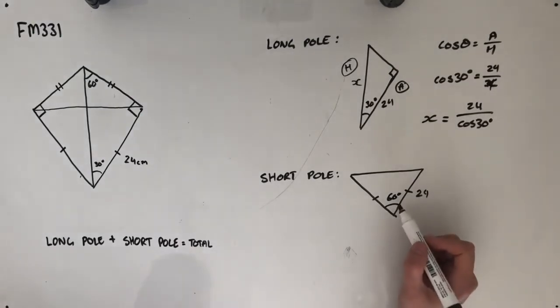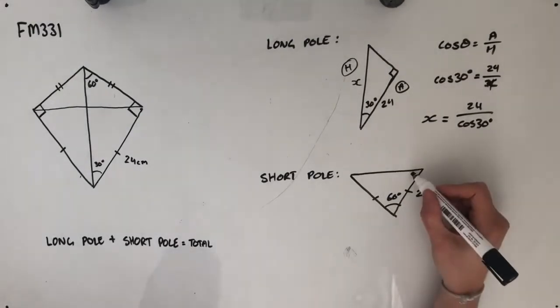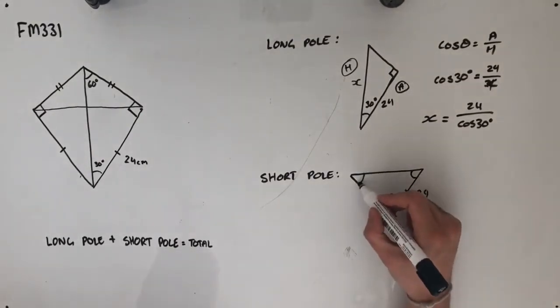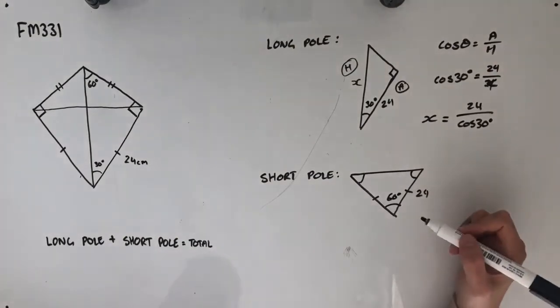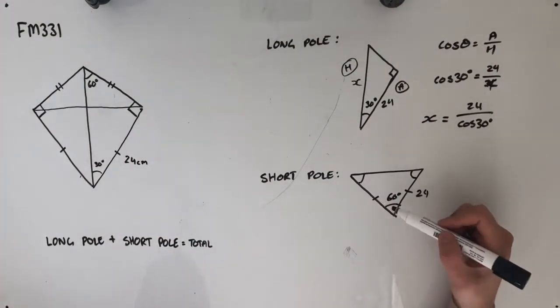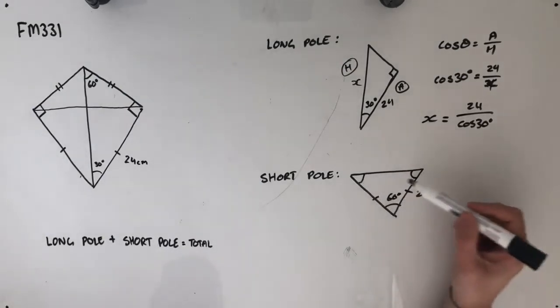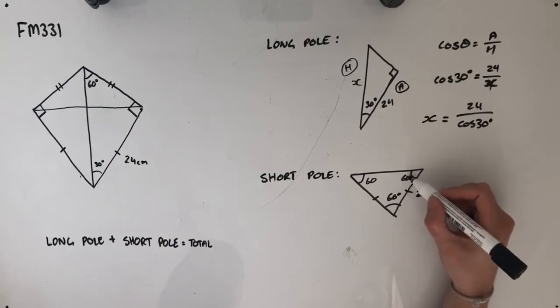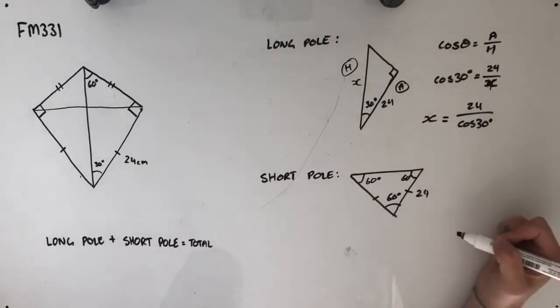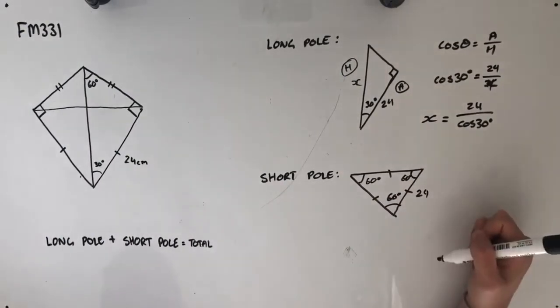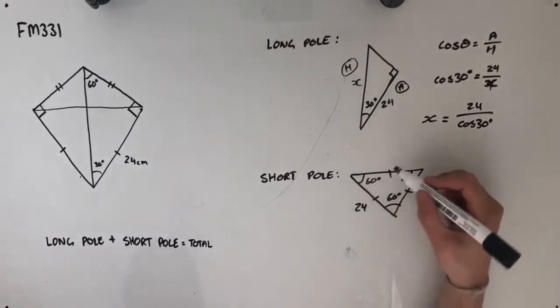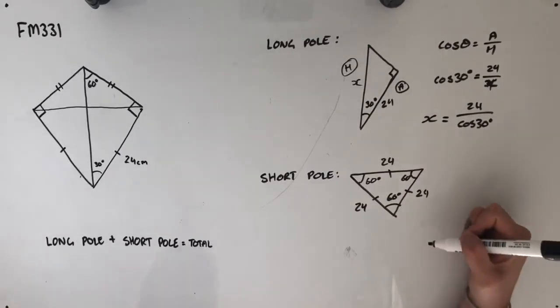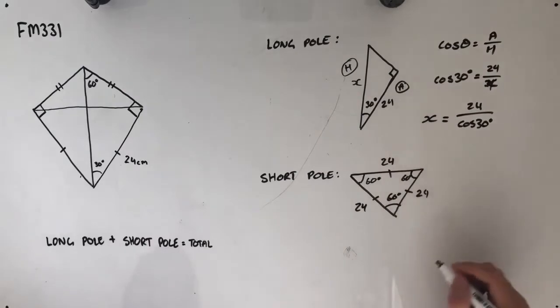At this point, you might start thinking to yourself, well, if this is 60 degrees here, that means that these two angles, since this is an isosceles triangle as far as we know so far, if this is 60 degrees, then the remaining 120 degrees must be split evenly between these two, at which point you may discover that this is actually an equilateral triangle, which means each of the side lengths is 24 centimeters, which means that our short pole length